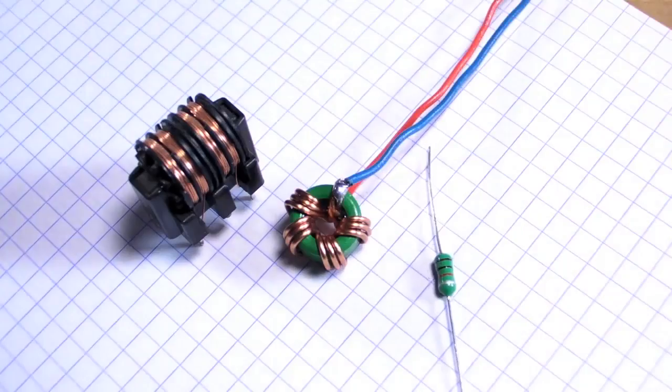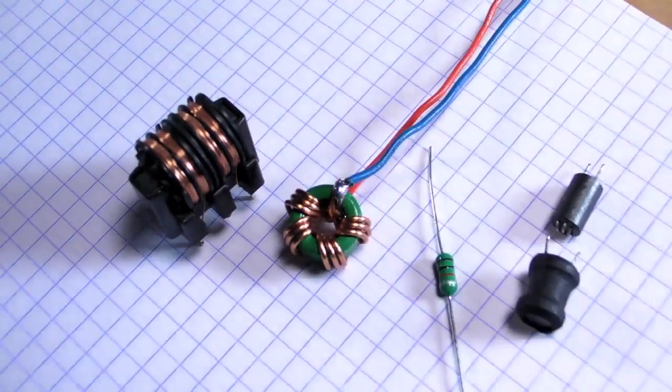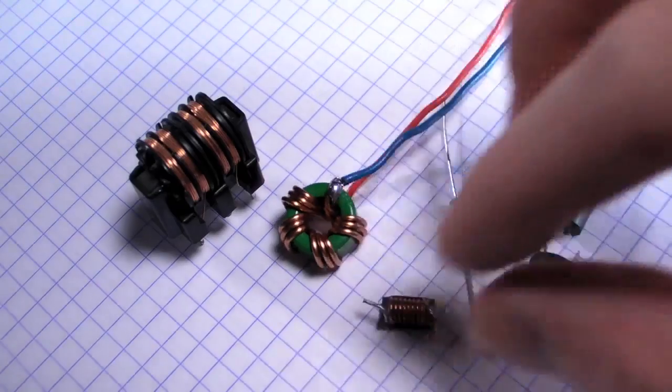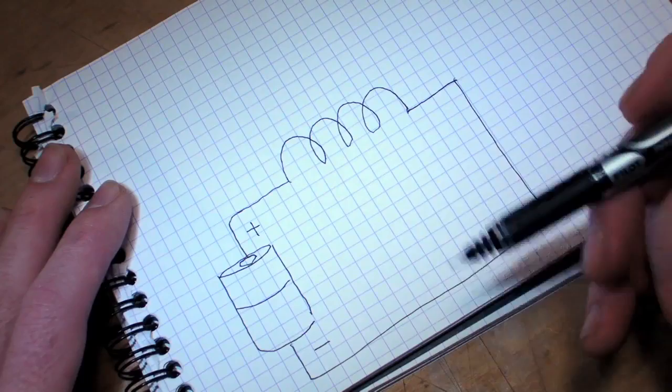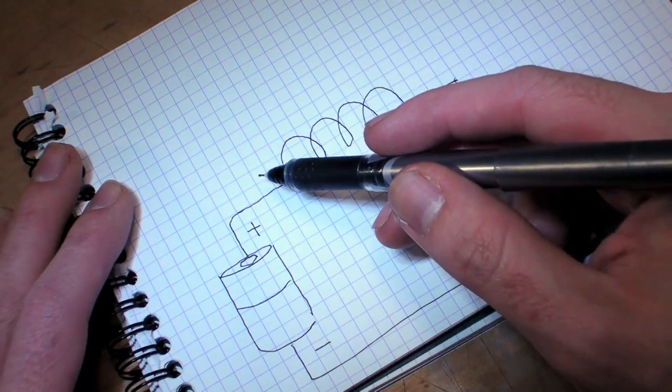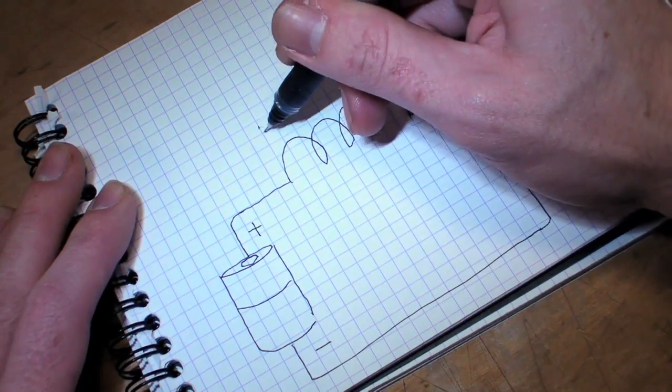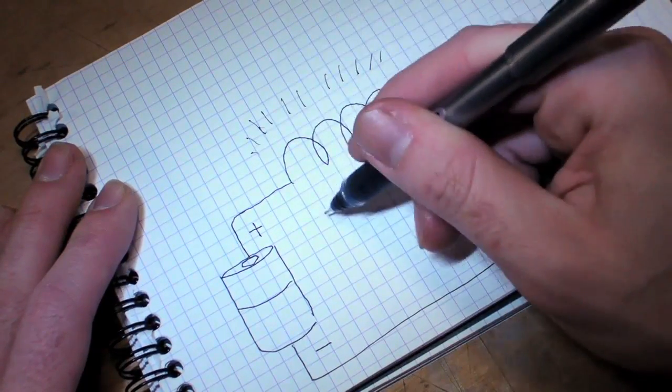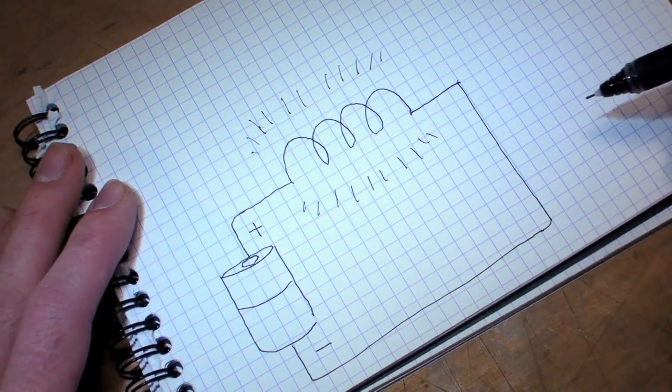Now, a core is often made of iron, but it could also be plastic or even air, like this one. When current from a DC power supply starts to flow forward through a coil, some of its initial energy is stored in an electromagnetic field around the coil. As you may have guessed, this electromagnetic field is the basis for electromagnets.